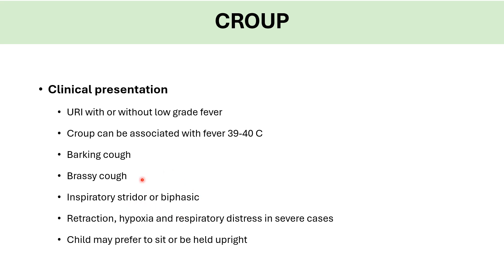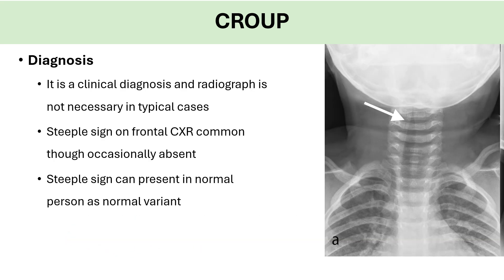In more severe cases, you will see suprasternal retractions. Hypoxia is very serious and requires immediate admission. Respiratory distress may occur, and the child might prefer to sit or be held upright. Croup is a clinical diagnosis — when you hear the barking cough, you make your diagnosis. No need to order a chest X-ray.